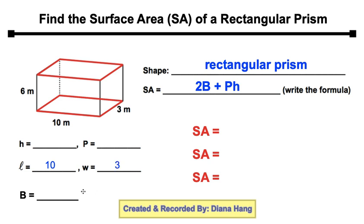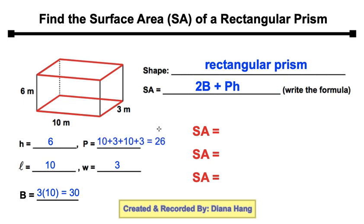Capital B stands for the area of the rectangular base. Do you remember how to find the area of a rectangle? 3 times 10 would be 30. Now look at how tall our prism is — that would be variable H, which is 6. Capital P stands for the perimeter of your rectangular base — here is your red outlined rectangular base. The perimeter should be 26.